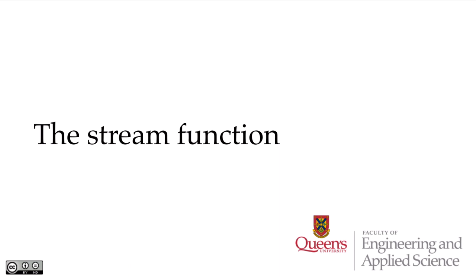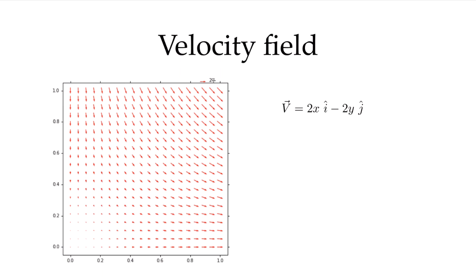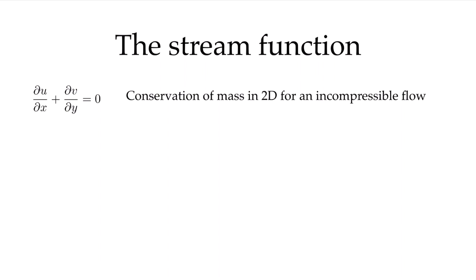In this video we're going to look at a very interesting and useful function related to the conservation of mass equation. That function is called the stream function. Let's review the velocity field from the velocity fields and conservation of mass video, where the u component was 2x and the v component was minus 2y. We solved for minus 2y to ensure conservation of mass was enforced. Conservation of mass for two-dimensional incompressible flow is du/dx plus dv/dy equals zero, and we're going to use that to develop the stream function.